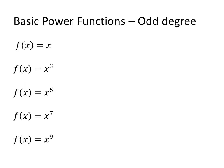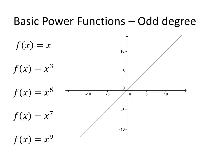Looking at the odd-degree power functions: f of x equals x is unique, but shares something in common with the other odd-degree functions — it starts in the third quadrant and ends in the first quadrant, starting low and ending high. x cubed also starts low and ends high. x to the fifth has that same basic shape but is steeper. x to the seventh is steeper yet, and x to the ninth is even steeper.